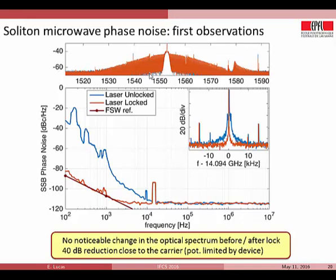We were excited to try this new capability. Generating solitons and locking — with the laser unlocked versus locked — we observed no change in the optical spectrum, confirming we preserve the soliton state. Looking at the microwave signal, we see around 100 Hz offset a 40 dB reduction in noise, demonstrating soliton states are very sensitive to input pump noise. At this offset we are in fact limited by the measurement device. This performance is not optimized — we were not being particularly careful about power levels in this initial experiment.